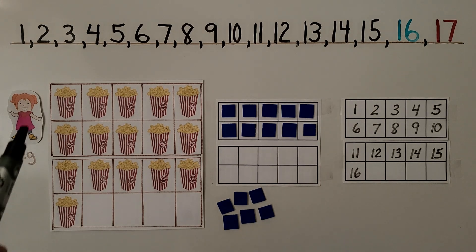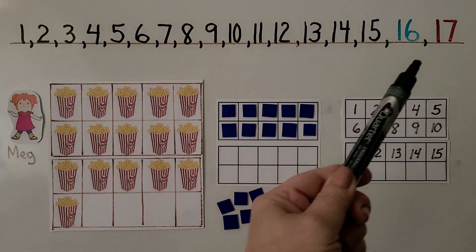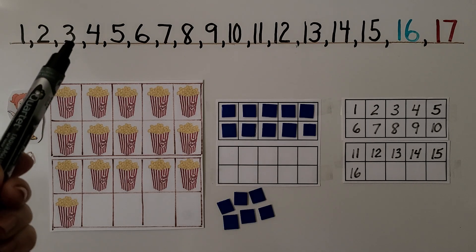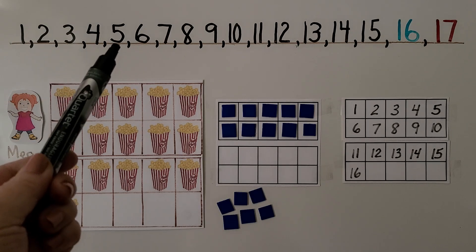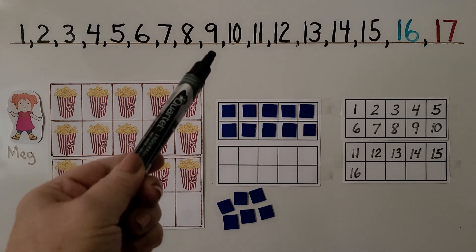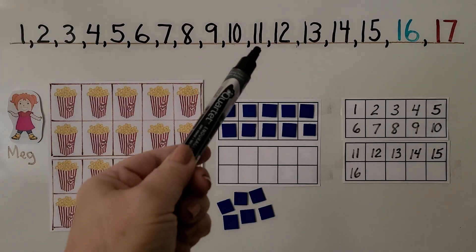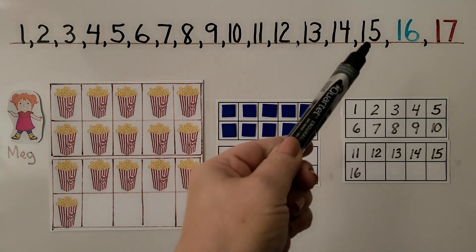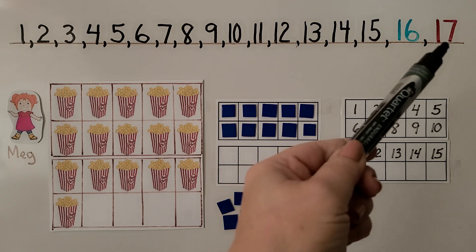Here we have the numbers in counting order going all the way up to 17. Can you count with me? 1, 2, 3, 4, 5, 6, 7, 8, 9, 10, 11, 12, 13, 14, 15, 16, 17.